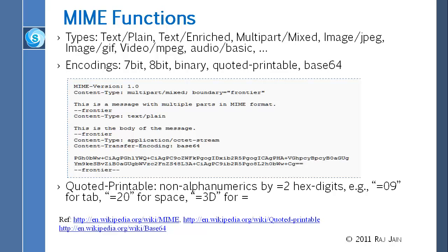The boundary marker 'frontier' marks the beginning of each part. Then content type is specified — for example, text/plain — followed by the body of the message, and so on. This has nothing to do with security itself, but this is how a mail looks. If you were to look at the mail on the wire using a tool like Wireshark, this is what you would find in normal mail.